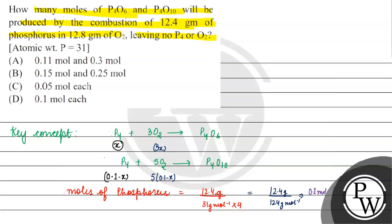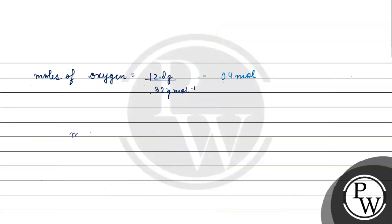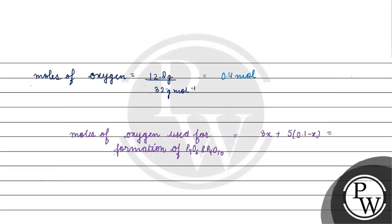Total moles of oxygen used for formation of P4O6 and P4O10 equals 3x plus 5 times (0.1 minus x), which equals 3x plus 0.5 minus 5x, which simplifies to 0.5 minus 2x. Setting this equal to 0.4: 0.5 minus 2x equals 0.4.